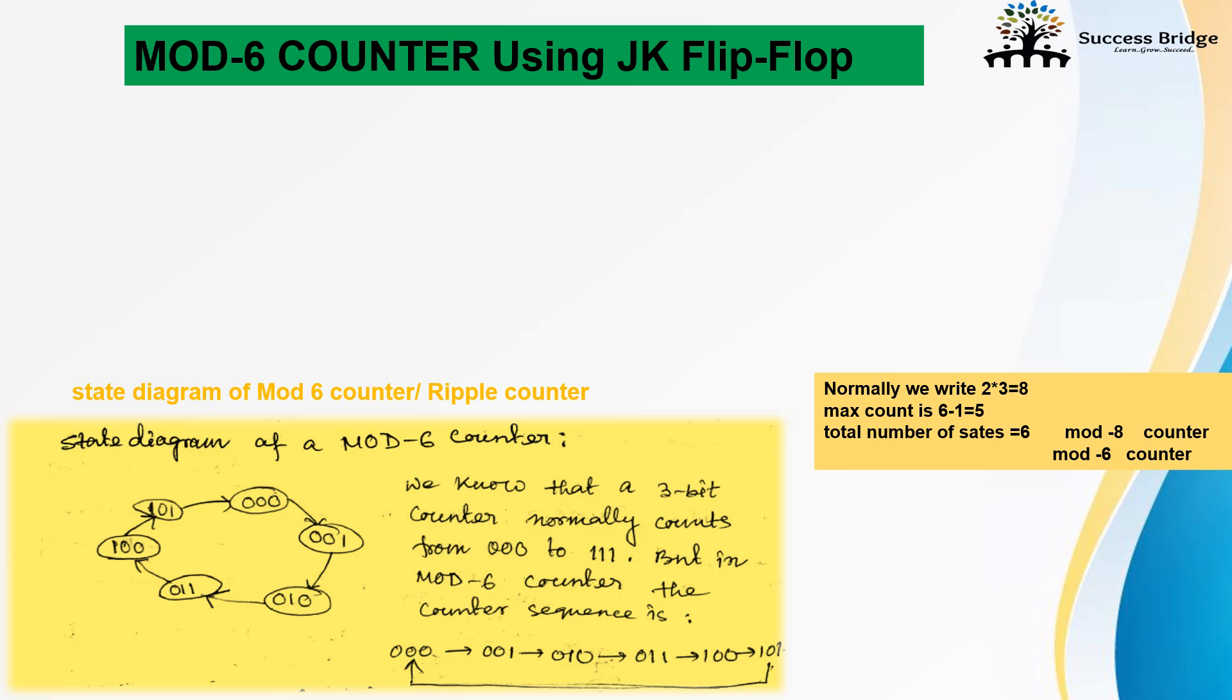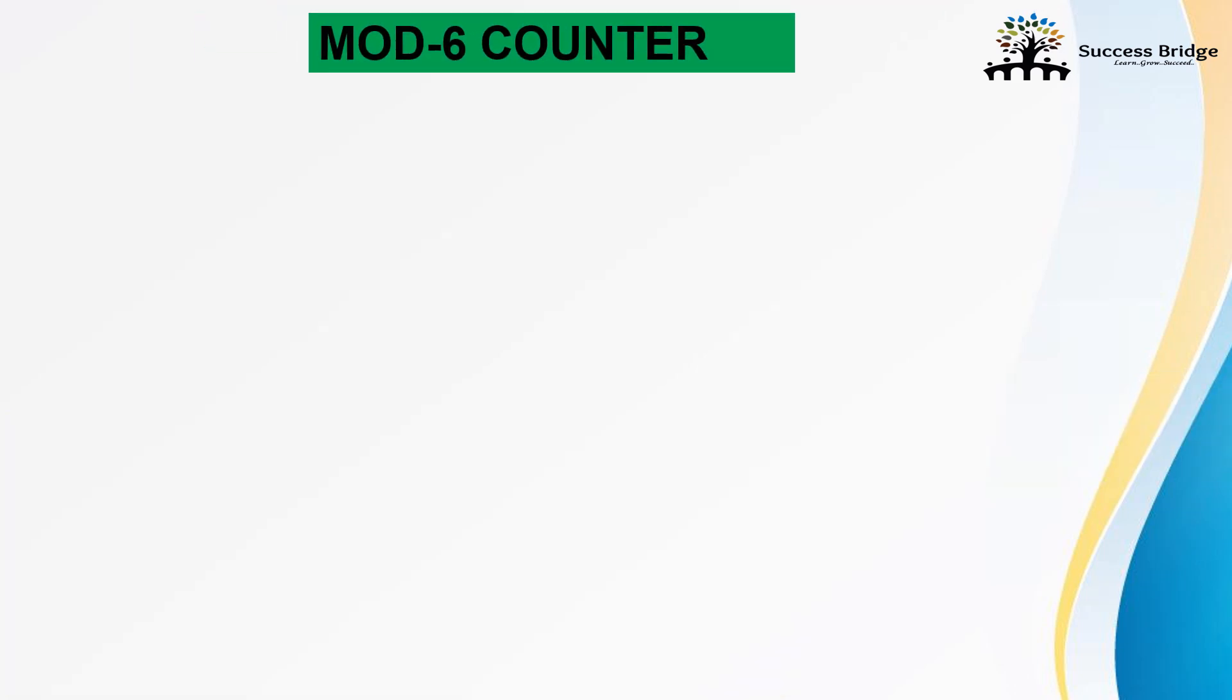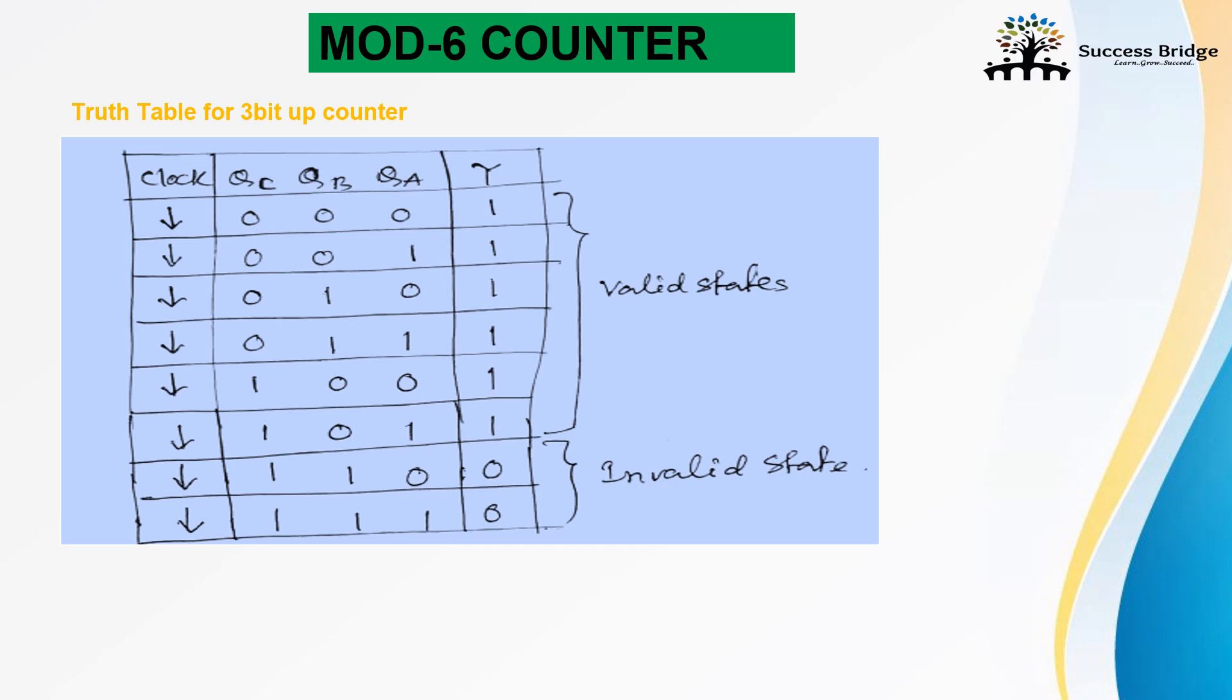Let's discuss the next step is truth table. We required a truth table for mod 6 counter. According to the truth table, QC, QB and QA are the output. It counts up to 0 to triple 1, but we have the valid state 0 to 101. This is considered as the valid state.